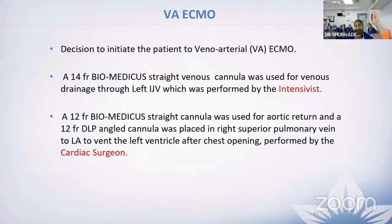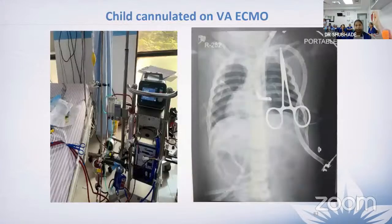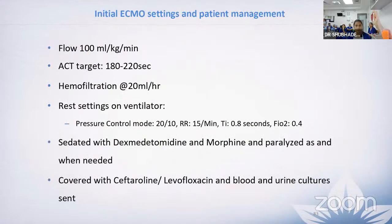A 14 French Biomedicus straight venous cannula was used for venous drainage through the left IJV, performed by the intensivist. A 12 French Biomedicus straight cannula was used for aortic return. A 12 French DLP angled cannula was placed in the right superior pulmonary vein to vent the left ventricle, performed by the cardiac surgeon. Initial ECMO settings: flow 100 ml per kg per minute, ACT target 180 to 220 seconds, hemofiltration at 20 ml per hour, ventilator on pressure control mode 20 over 10 with RR 15 per minute and FiO2 0.4.